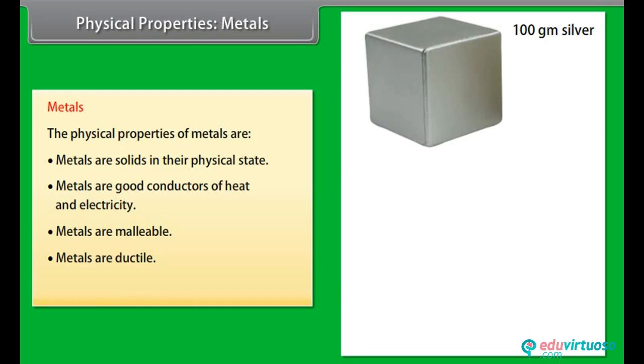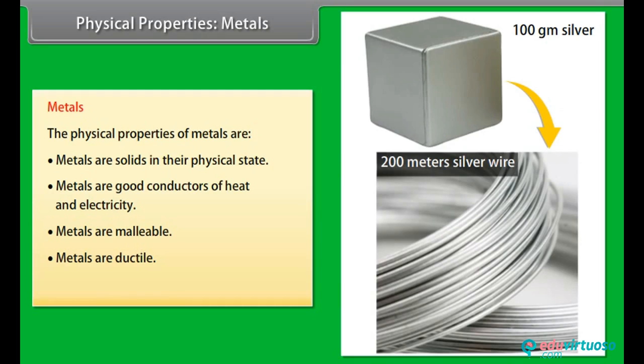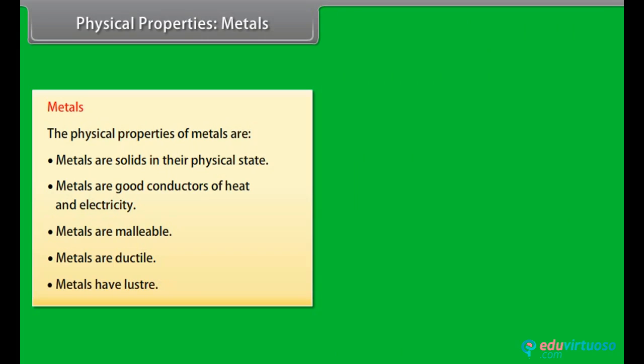Ductile. Metals can be drawn into wires. For example, 100 grams of silver can be drawn into a thin wire of about 200 meters long.